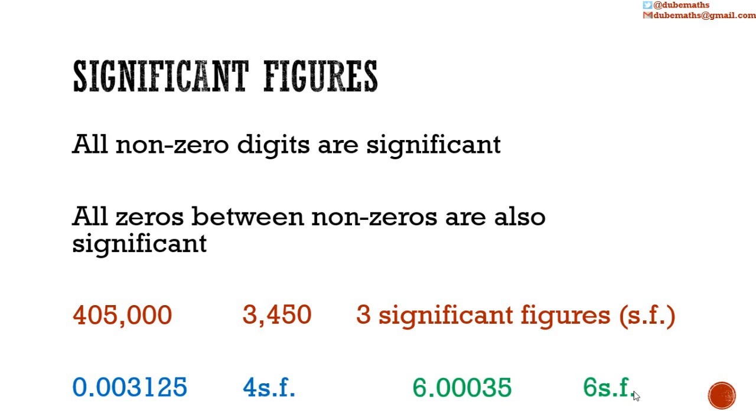Of all the significant figures, the leftmost has the highest place value and it is thus most significant, and the rightmost is least significant.